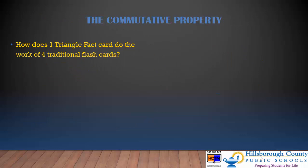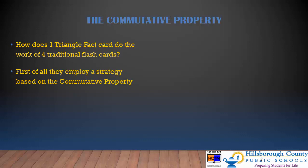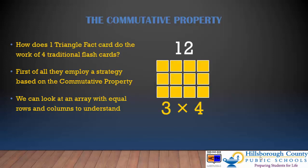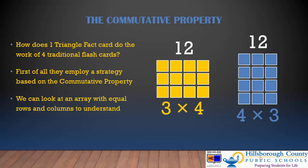So how does one triangle fact card do the work of four traditional flash cards? First of all, they employ a strategy based on the commutative property of multiplication. We can look at arrays with equal rows and columns to understand how this works. Let's look at three rows of four — we're going to have 12 squares in this array. Now let's look at four times three, which can be shown as four rows with three in each row. We're still going to have 12 squares. So as students have explored and examined this property, they'll soon come to understand that if I know three times four, I should also know four times three, or vice versa.